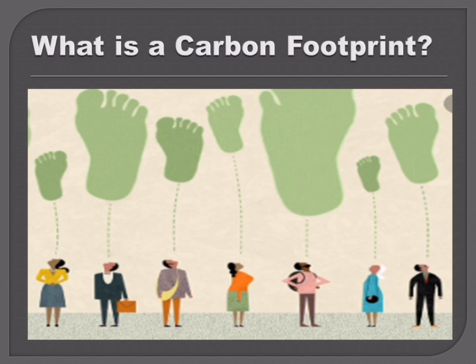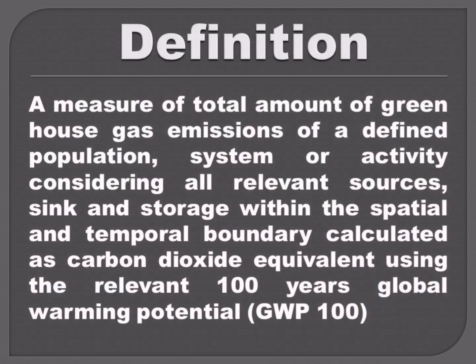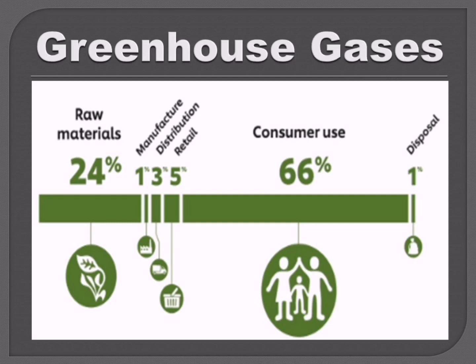Usually, a carbon footprint is calculated for the time period of a year. Later on, Wright, Camp and Williams defined carbon footprint as a measure of the total amount of greenhouse gas emissions of a defined population, system or activity, considering all relevant sources, sinks, and storage within the spatial and temporal boundary, calculated as carbon dioxide equivalent using the relevant 100-year global warming potential. According to WHO, a carbon footprint is a measure of the impact of our activities on the amount of carbon dioxide produced through the burning of fossil fuels, expressed as a weight of carbon dioxide or equivalent produced in tons.